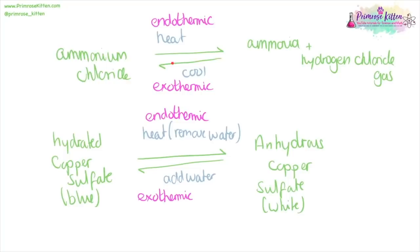The half arrow on top of the other half arrow going in the opposite direction is a symbol for a reversible reaction. Ammonium chloride will decompose into ammonia and hydrogen chloride gas upon heating. This is an endothermic reaction because you need to put heat into it. Cooling it is an exothermic reaction because energy will come out. Hydrated copper sulfate, which is a lovely blue colour, upon heating will lose the water and turn into anhydrous copper sulfate, which is a white colour. Adding water back in will turn it back to hydrated copper sulfate.